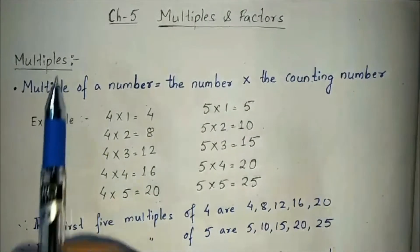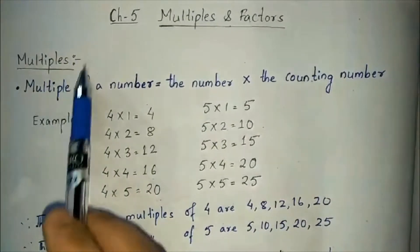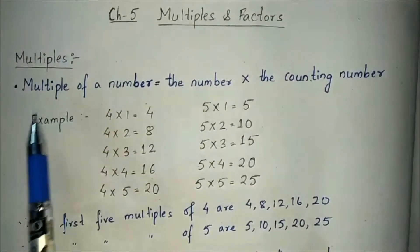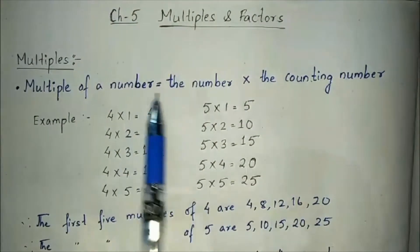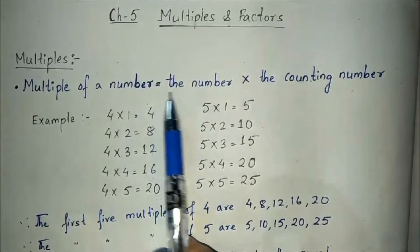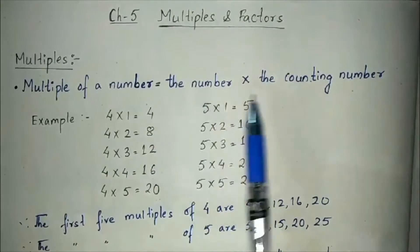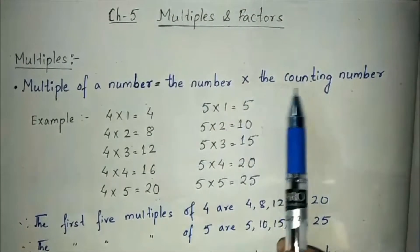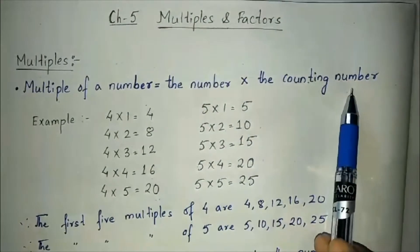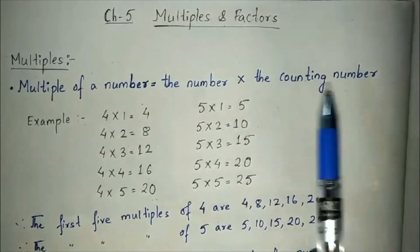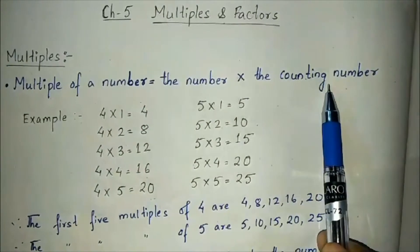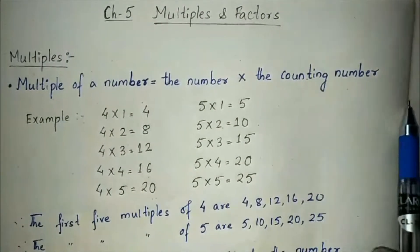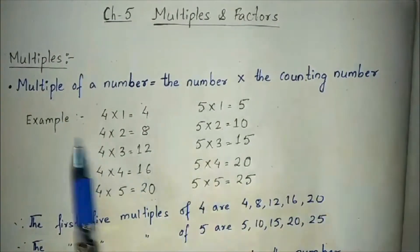Let us learn what are multiples. A multiple of a number is equal to the number multiplied by a counting number. The counting numbers are 1, 2, 3, 4, 5 and so on.